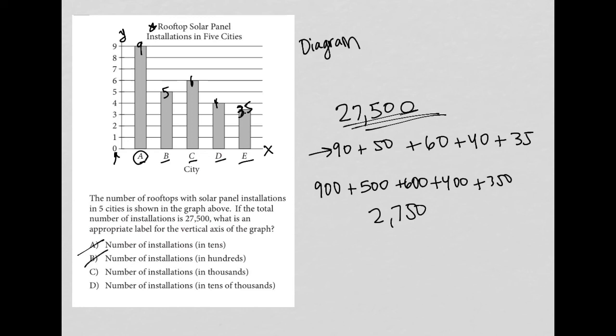So choice C says thousands. So now instead of 900, I have 9,000, 5,000. I think you get the point. I'm just adding another zero to all of these values. So 3,500. And once again, I go to my calculator. I add all those values together.